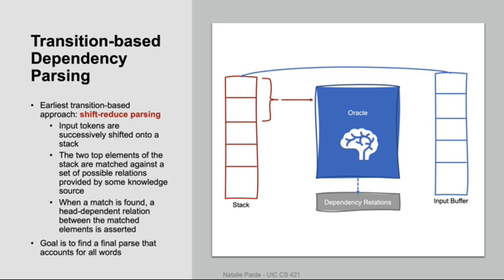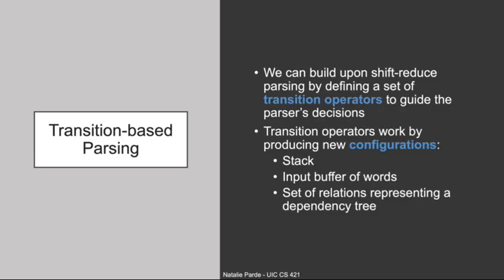When a match is found, that relation is created between the matched elements, the dependent is popped from the stack, and a relation is added to the set of relations identified so far. The end goal is to have a single final parse that accounts for all of the words in the input. Shift-reduce parsers generally have a set of transition operators that help facilitate this process, and each of these operators interacts with the stack, the input buffer of words, and the set of possible relations to produce new configurations.